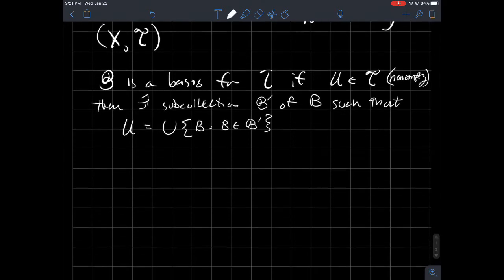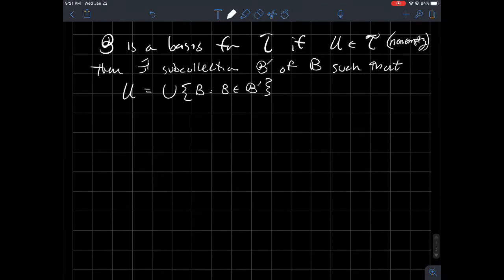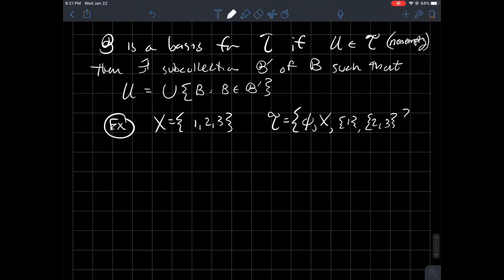So let me try to illustrate with an example. Here's a set, let's just say it's 1, 2, and 3. And let's say I'm going to tell you that this is the topology. So of course I need the empty set to be in there, the whole thing 1, 2, and 3. But then I'm going to tell you that 1 is open, and I'm going to tell you that 2, 3 together is open.